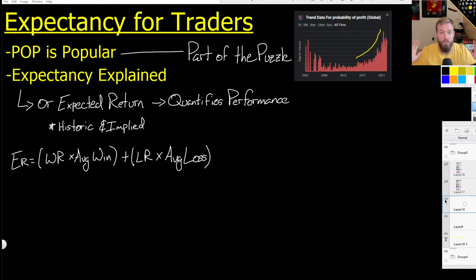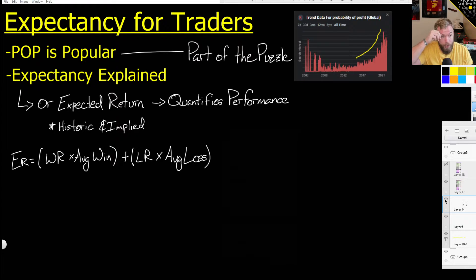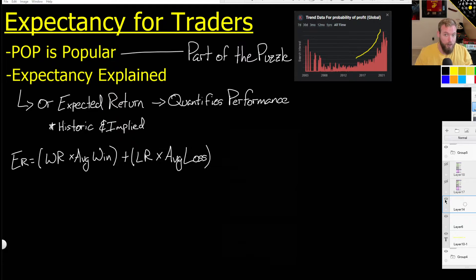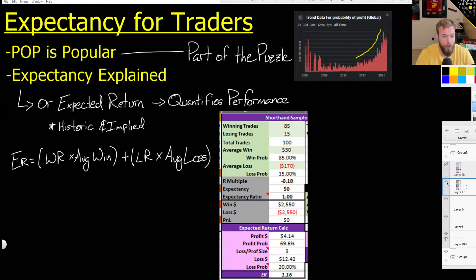So what is the equation? It's unbelievably easy — very simple. We take our win rate as a percentage times the average win, then we add the loss rate times the average loss. That's it. For whatever reason, people aren't taking this step. They're looking at probability of profit, thinking it's good enough, and forgetting the rest of this equation.